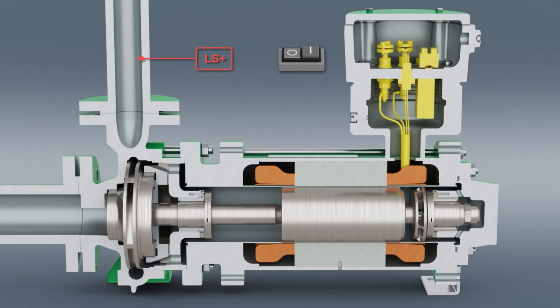The canned motor pump is filled through the suction nozzle. The fluid spreads in the pump as well as in the motor compartment and pushes the air through the discharge nozzle.